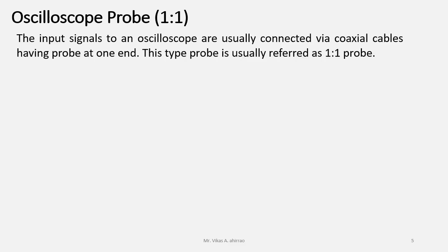Oscilloscope probes: We know that oscilloscope is a versatile instrument which is used for measurement, monitoring and analysis of different input signals or waveforms. The input signals to an oscilloscope are usually connected via coaxial cables which are having the probe at one end. That connector is also termed as a BNC. This type of probe is usually referred as 1:1 probe.